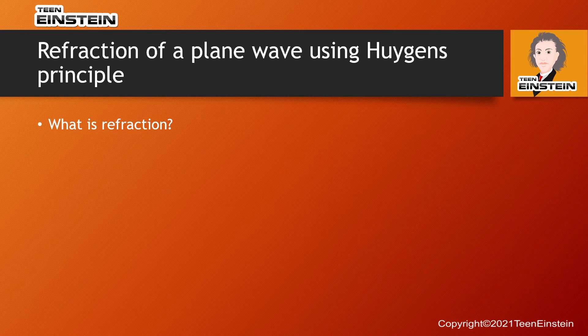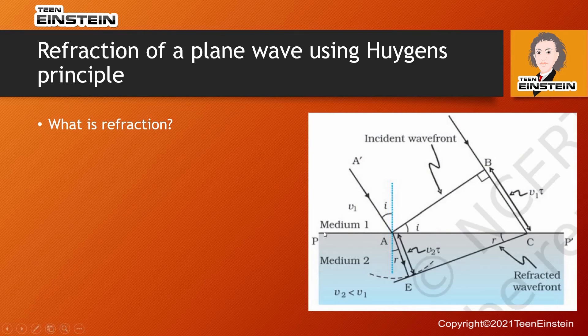Now we will see what is refraction of a plane wave using Huygens' principle. What is refraction? When light moves from one medium to another medium, it encounters a surface — the interface between medium 1 and medium 2. In some mediums, light travels with a different speed; light can be faster or slower compared to vacuum.